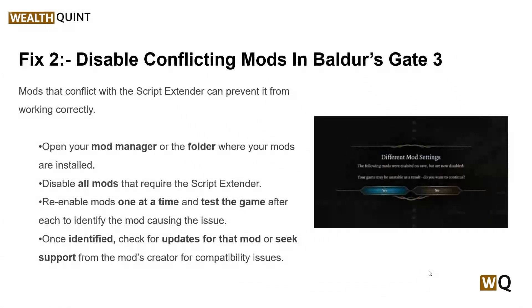Solution two is to disable conflicting mods in Baldur's Gate 3. Mods that conflict with the script extender can prevent it from working correctly. To do this, open your mod manager or the folder where your mods are installed, then disable all mods that require the script extender, then re-enable mods one at a time and test the game after each to identify the mod causing the issue.